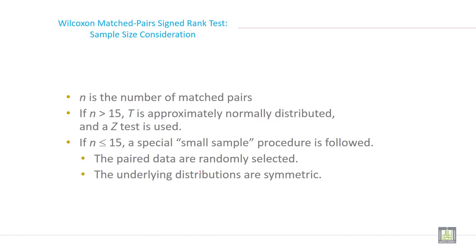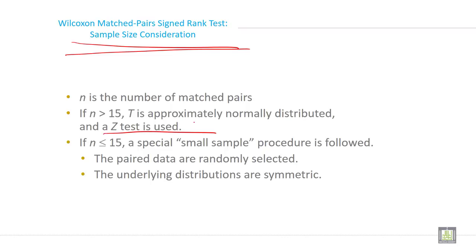For sample size consideration in the Wilcoxon test, N is the number of matched pairs. If N is greater than 15, T is approximately normally distributed and a Z-test is used. If N is less than or equal to 15, a small sample size procedure is followed. The paired data are randomly selected and the underlying distributions are symmetric.